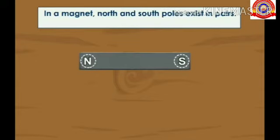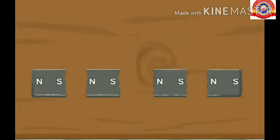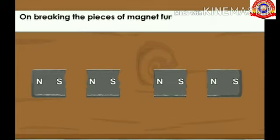If a magnet is broken into two pieces at the middle, each piece will become a complete magnet containing a north and a south pole. If the two pieces are further broken, each smaller piece still acts as a full magnet containing both the poles. On breaking the pieces of magnet further, it produces a large number of magnets with both the poles at the ends.